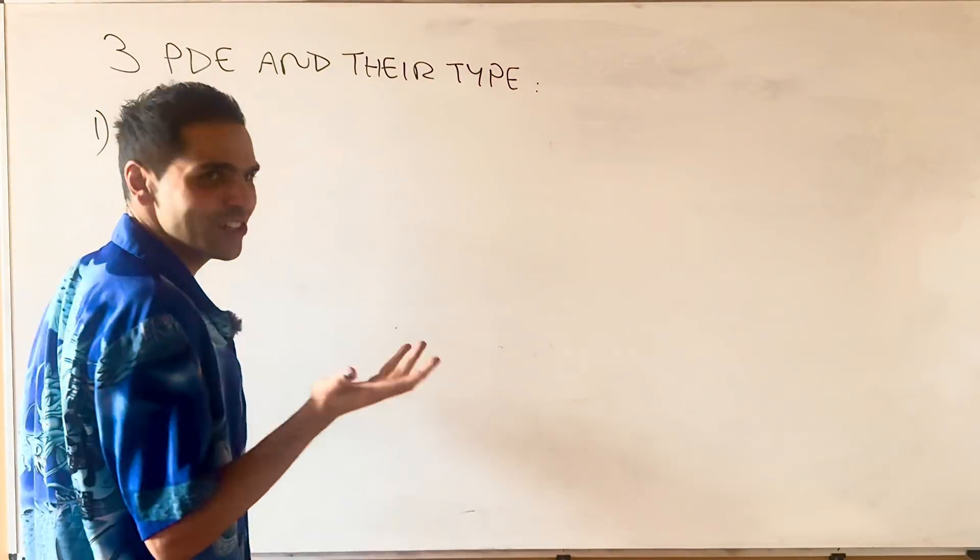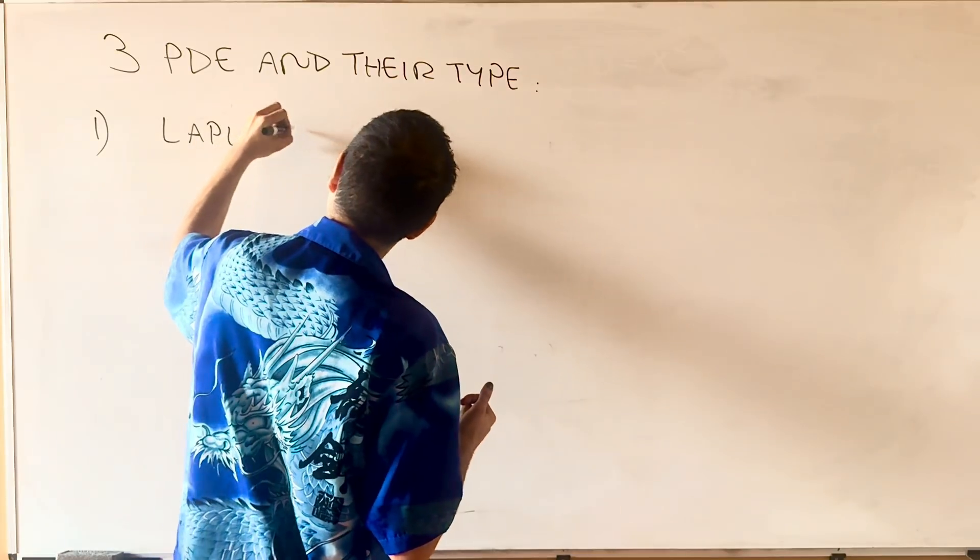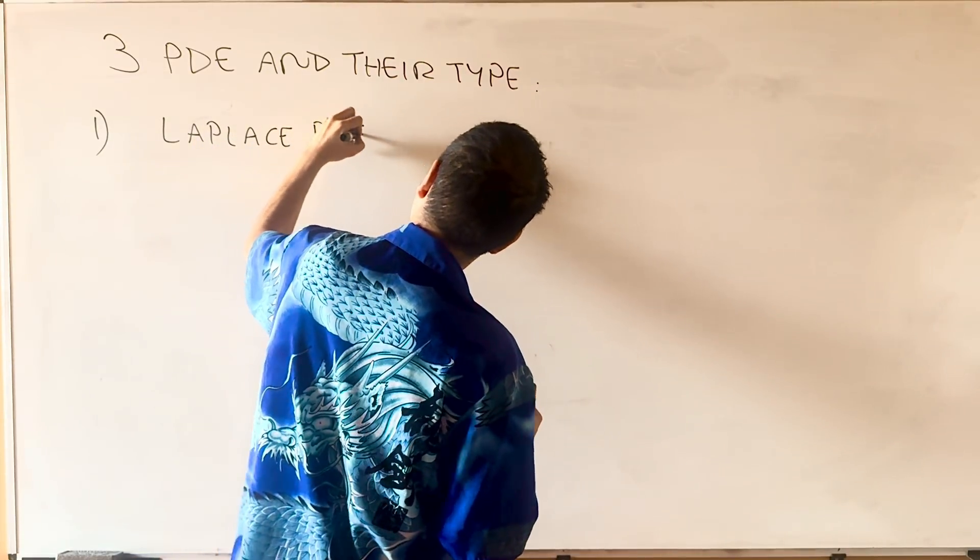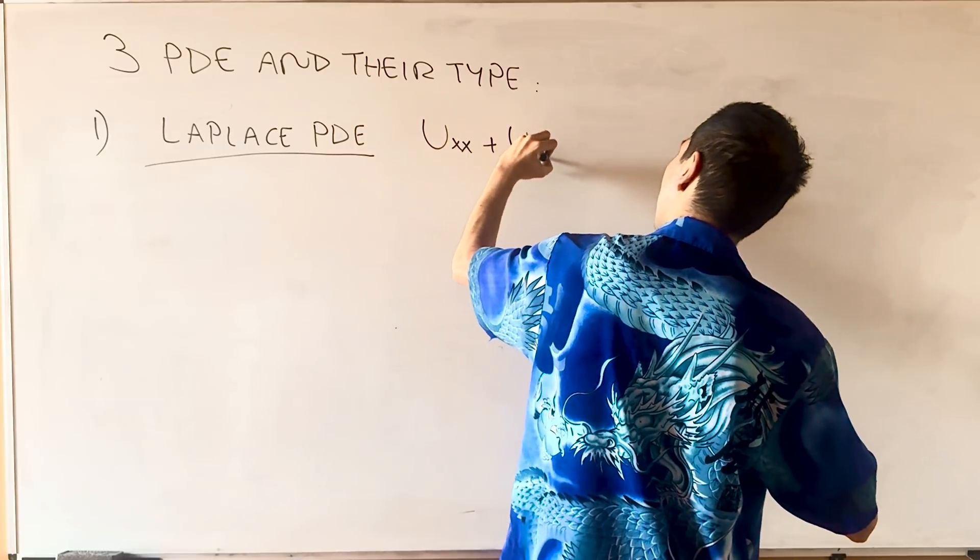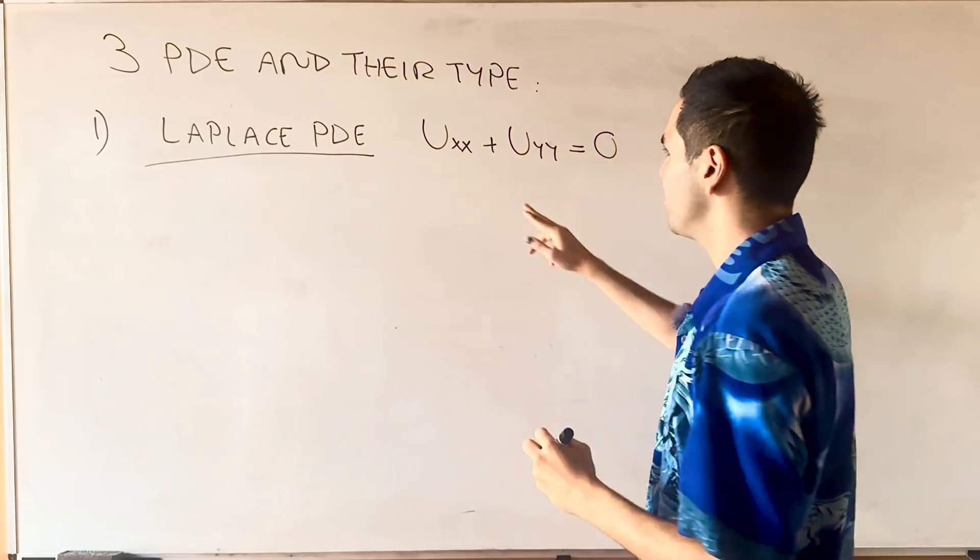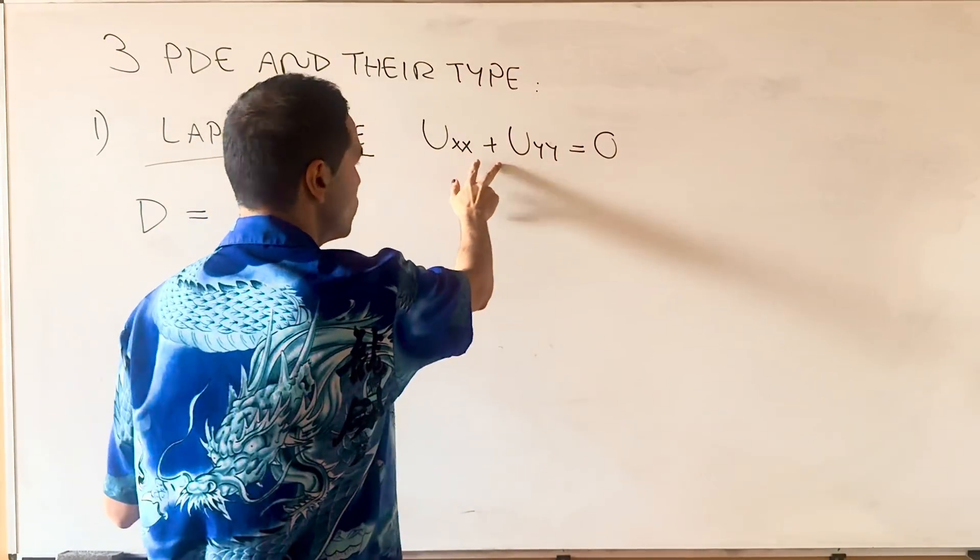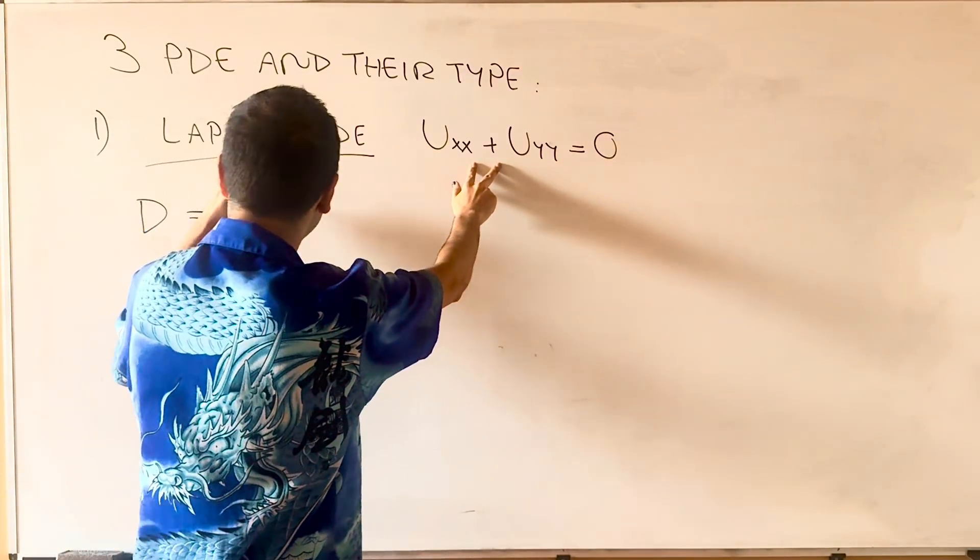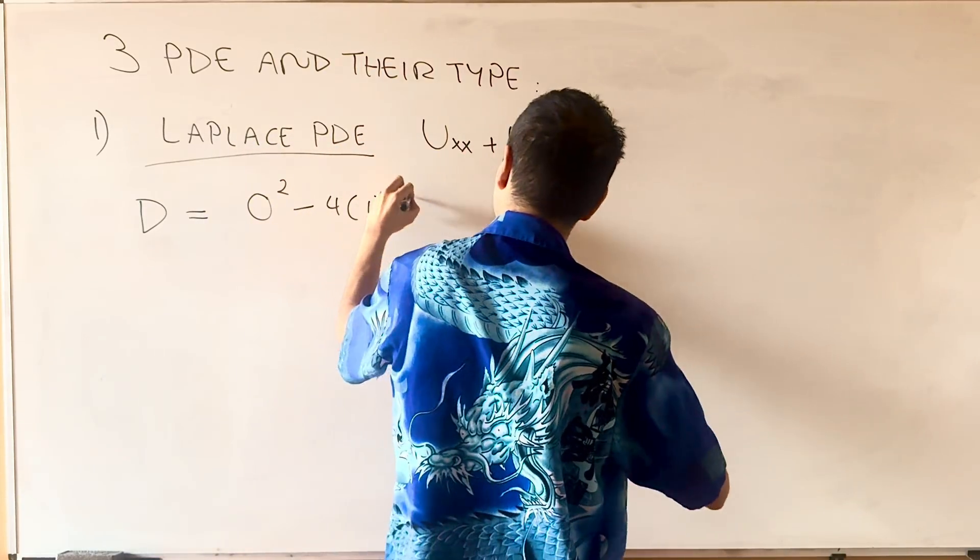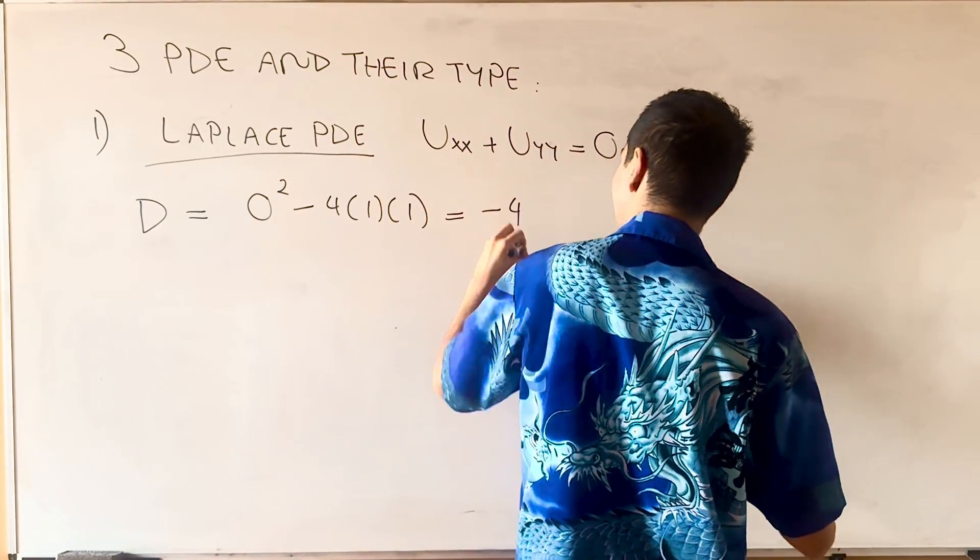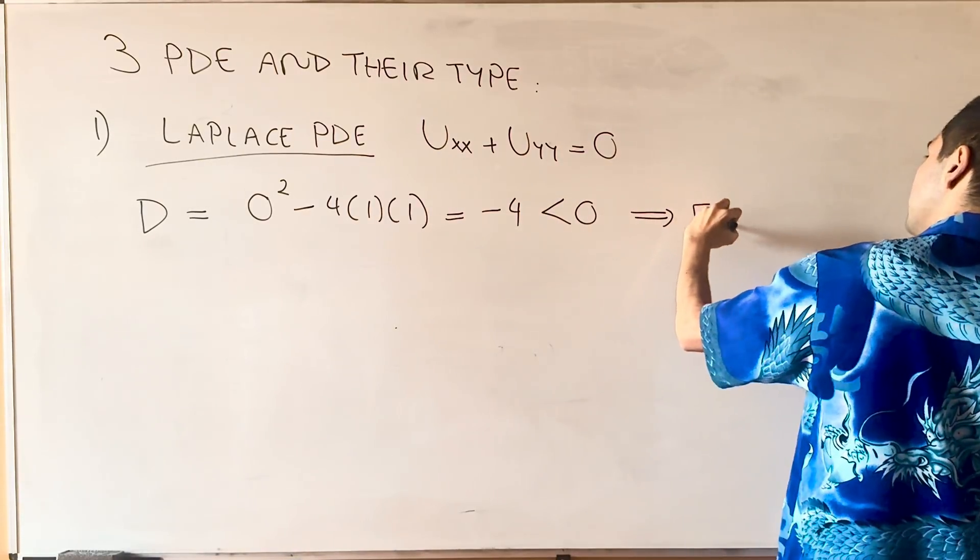The first one, which is my favorite, is Laplace's equation: U_XX plus U_YY equals 0. In this case, there's no XY term, so D is just 0² minus 4 times 1 times 1, which equals minus 4. This is negative, so this is elliptic.